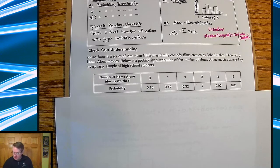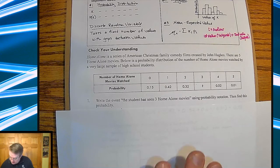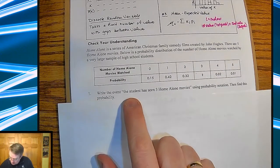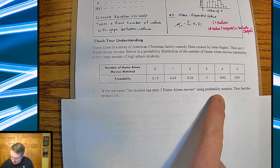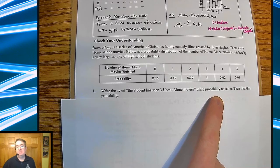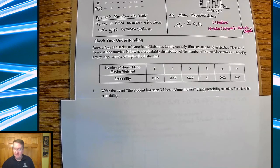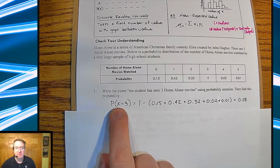So first question, write the event, the probability that the student has seen three Home Alone movies using probability notation. So that means you're going to be using P and then the parentheses for that, and then find the probability. So here's the probability notation.